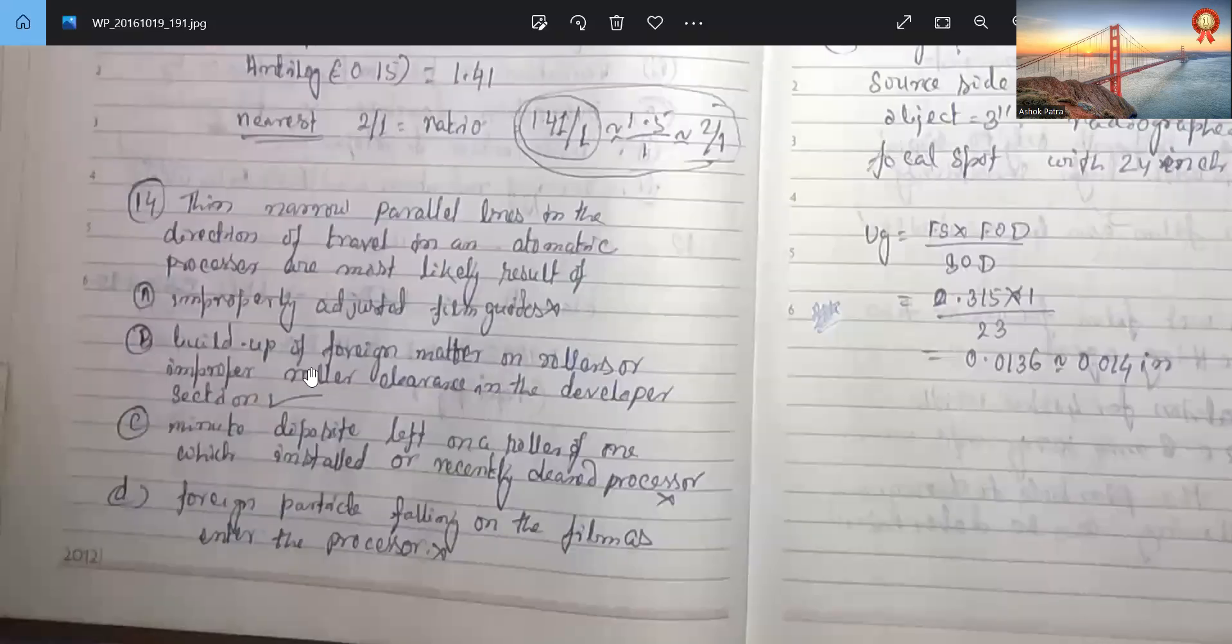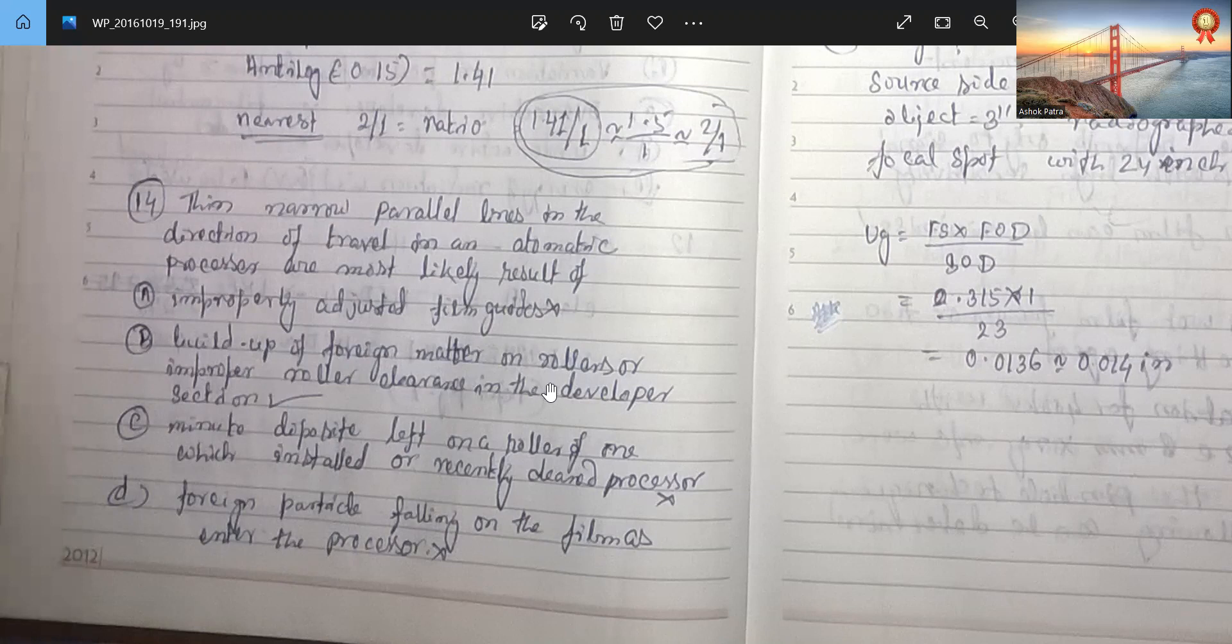Thin narrow parallel lines in the direction of travel in an automatic processor are most likely result of improperly adjusted film cards. No. Minor deposit left on a roller which was installed in recently cleaned processor. No. Foreign particle falling on the film as it enters the processor. No. So buildup of foreign matter in rolls or improper roller clearance in the developer section.